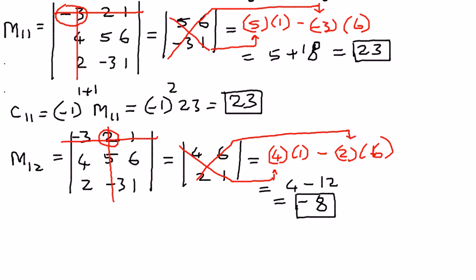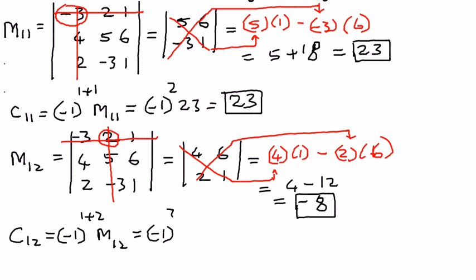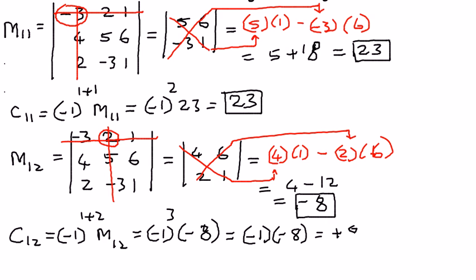Let's find the cofactor of this. C12 is going to be equal to negative 1 raised to the power of 1 plus 2, times M12. i is 1 and j is 2 here. Therefore, negative 1 raised to the power of 3, and M12 we just figured out is equal to negative 8. Therefore, negative 1 raised to the power of 3 is negative 1 times negative 8. Therefore, negative 1 times negative 8 is going to be positive 8. And that is the value of cofactor C12.